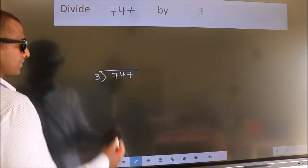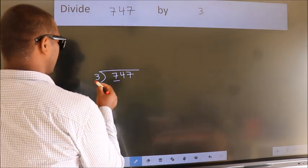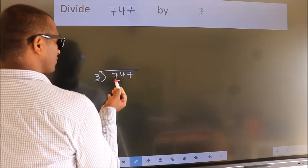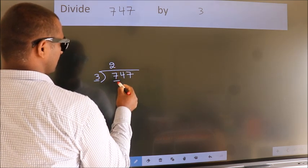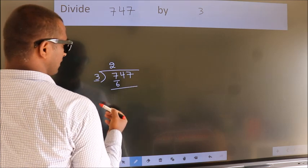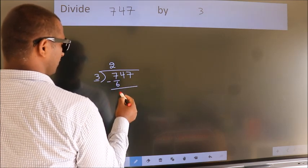Next. Here we have 7, here 3. A number close to 7 in the 3 table is 3 times 2 is 6. Now we should subtract. We get 1.